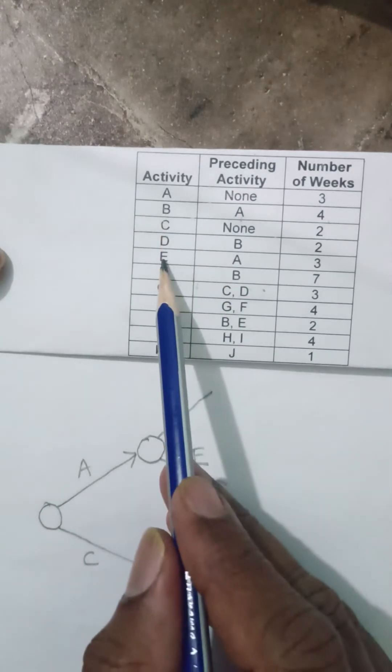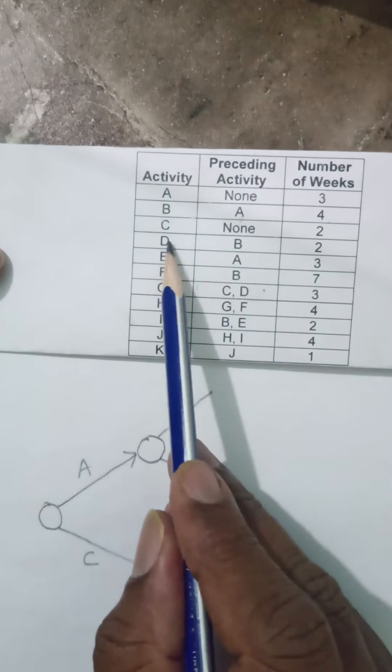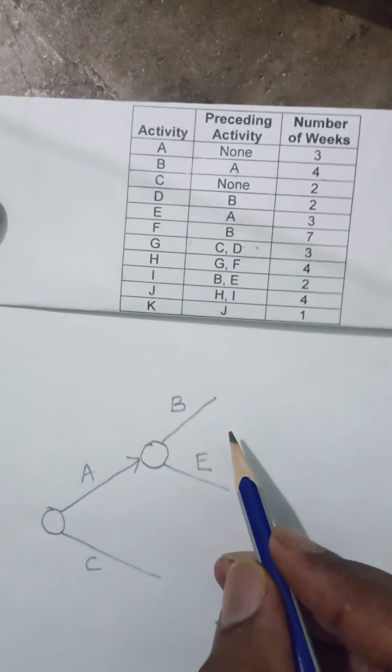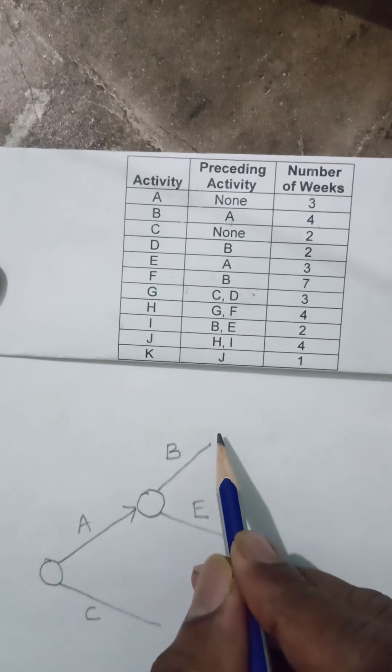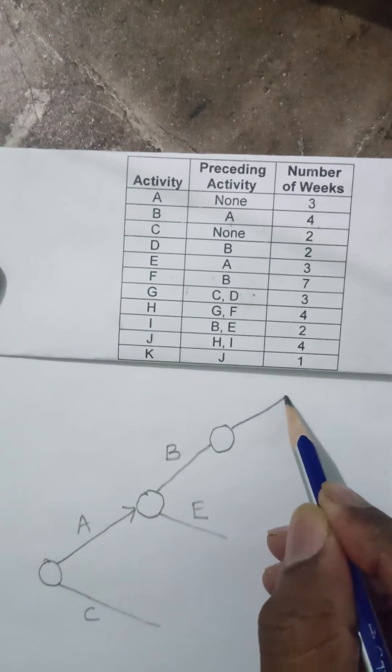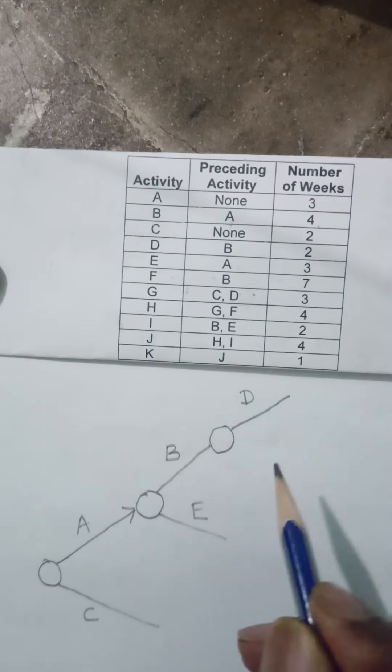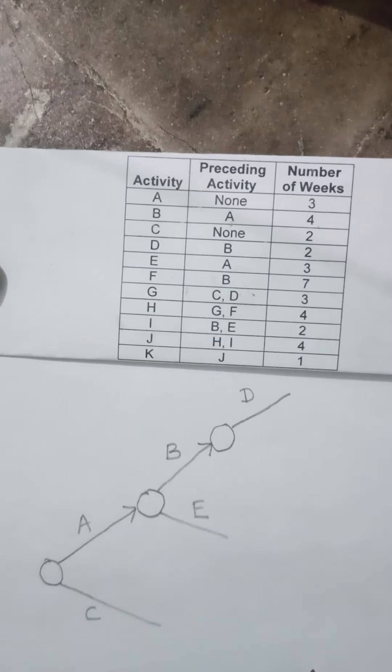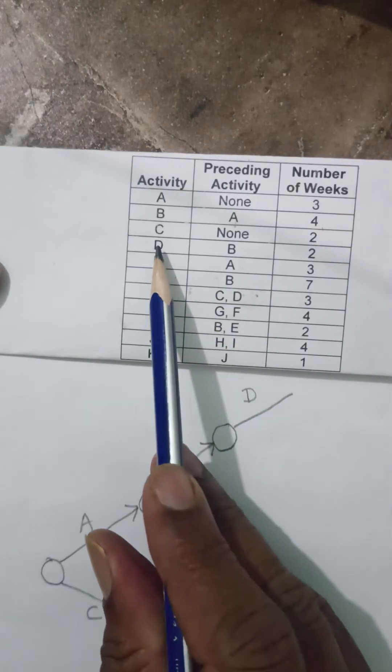I have done B, I have done E. Now D activity is after B. So I will start from B and maybe I will start activity D here. Whenever I start, then I can finish this activity by doing the arrow. I have come up to D.